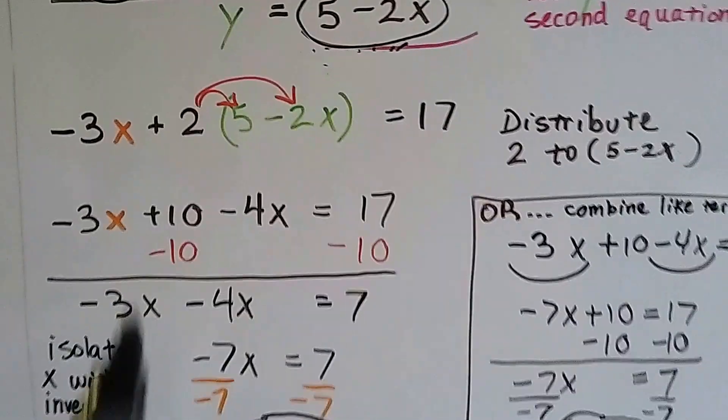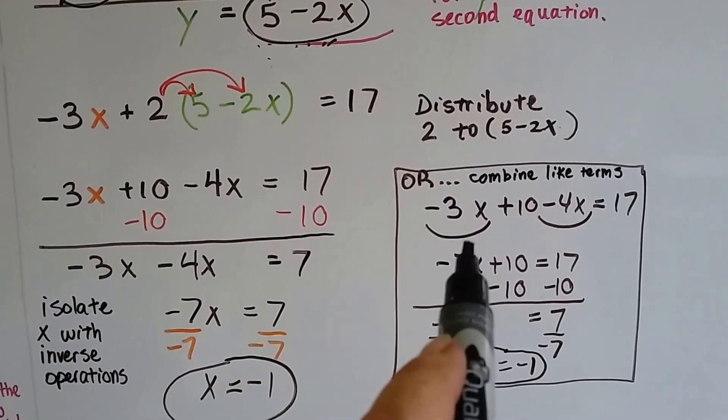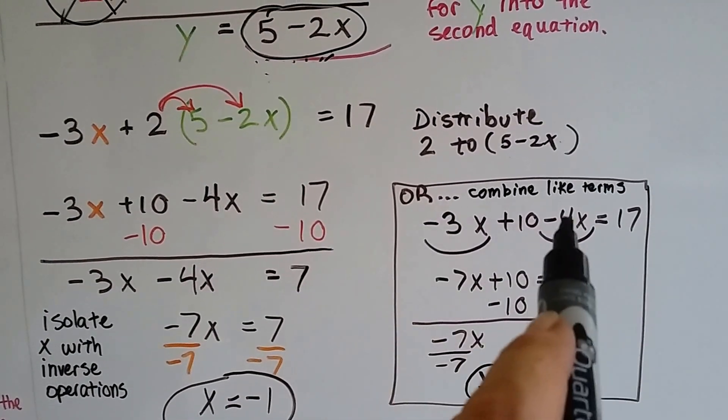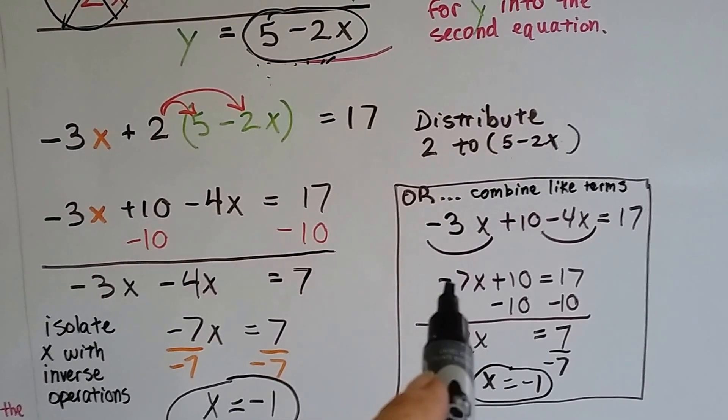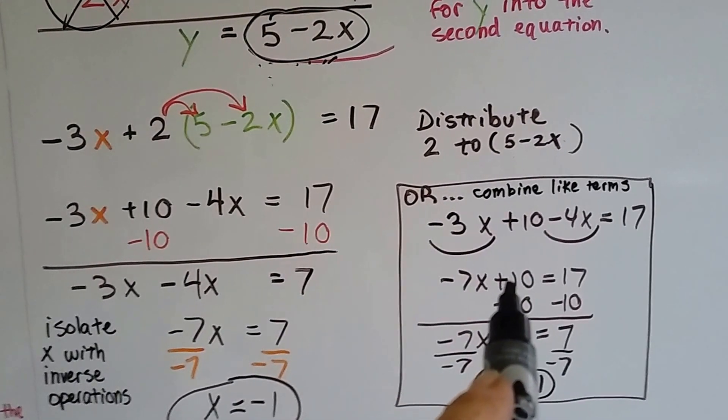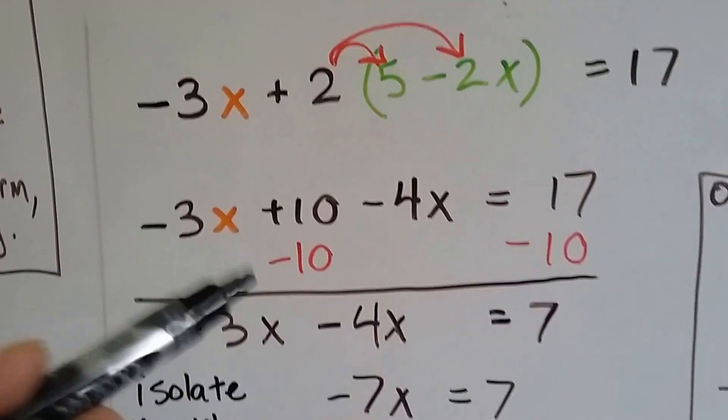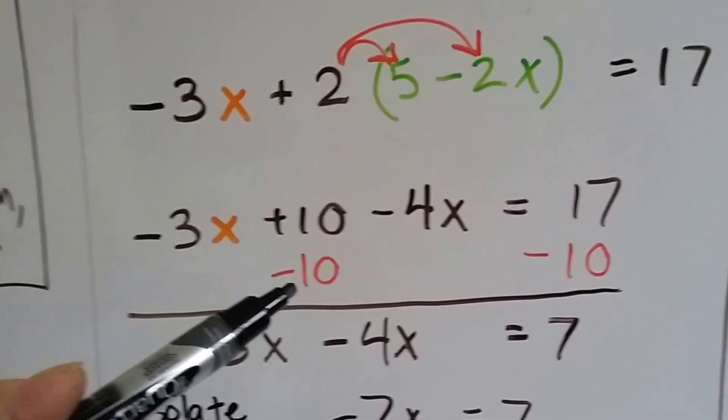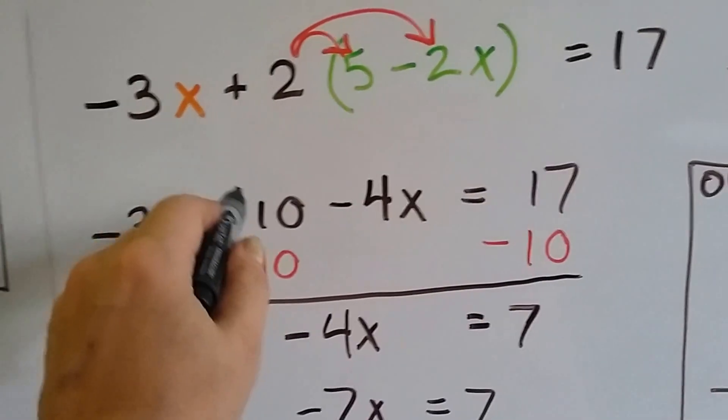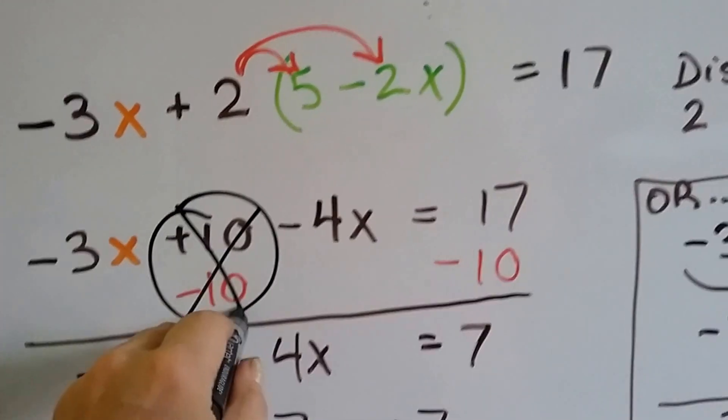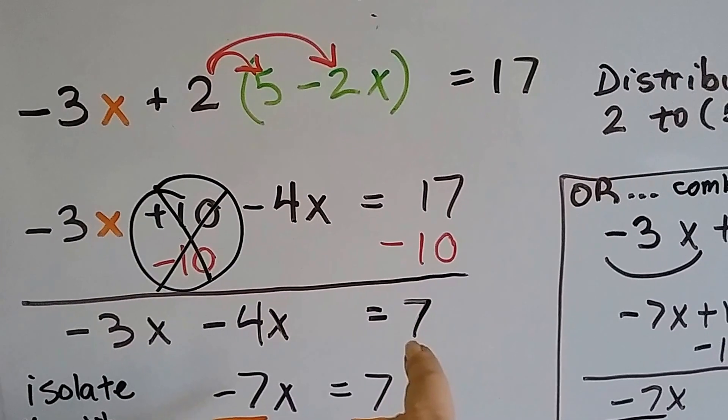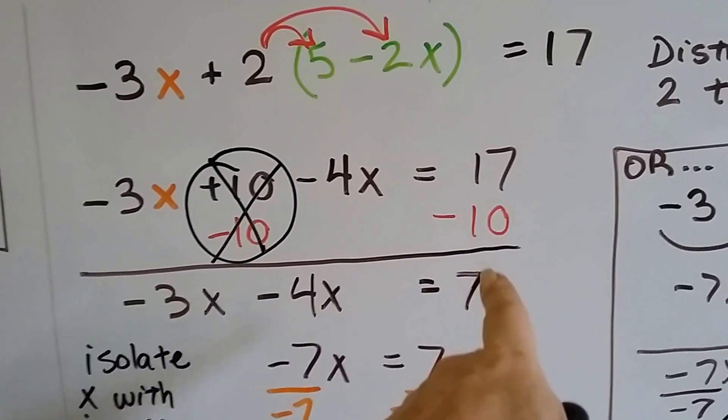Now there's one or two ways I could do this. I could combine like terms and put the negative 3x and the negative 4x together to get a negative 7x and then have the plus 10 equals 17, or I could just start trying to isolate the x right away by subtracting this 10.